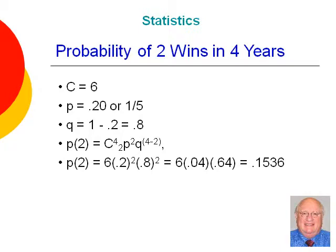So, in this problem, q, or the probability of failure, is equal to one minus 0.2, or 0.8. So ultimately our formula becomes the probability of two things is equal to six, the number of combinations, times 0.2 squared times 0.8 squared.